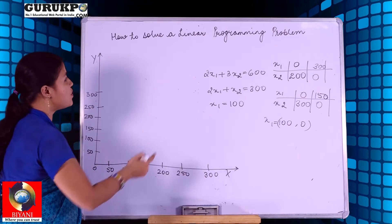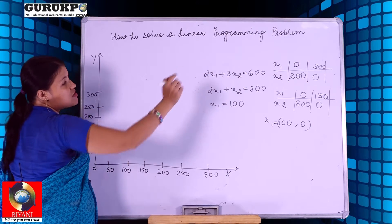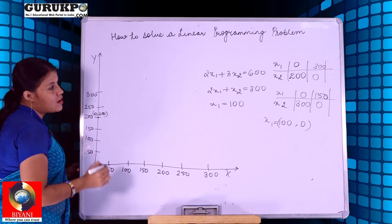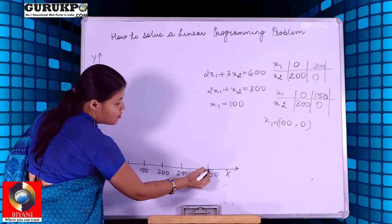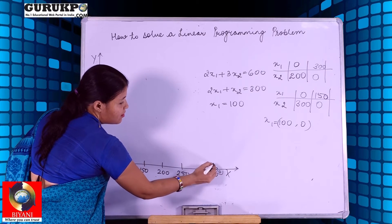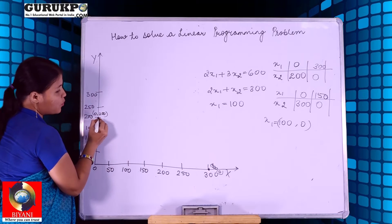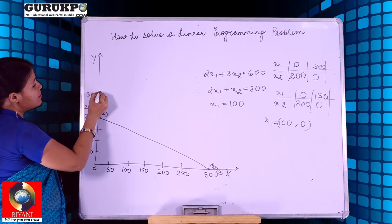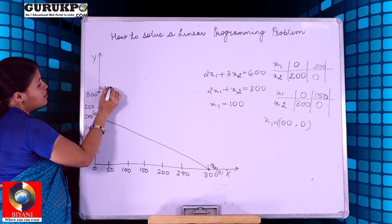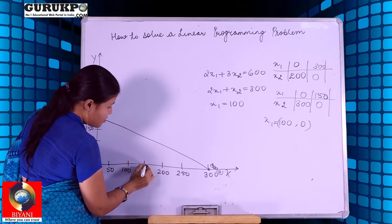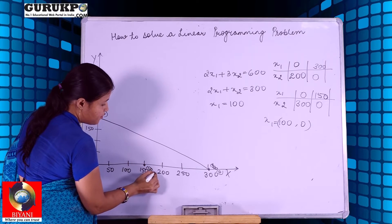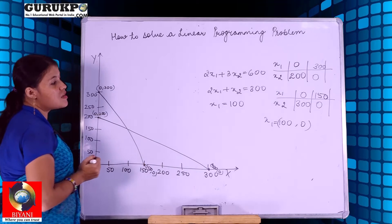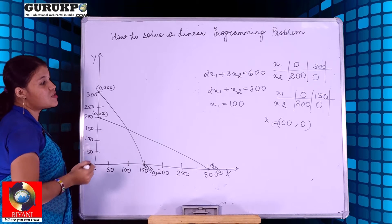Now we start plotting the points. x1 = 0 and x2 = 200 gives point (0, 200). Next is (300, 0). We join these two points for the first equation. For the second equation, we plot (0, 300) and (150, 0) and join them. For the third equation, we plot x1 = 0 and x1 = 100 with x2 = 0, and join those points.